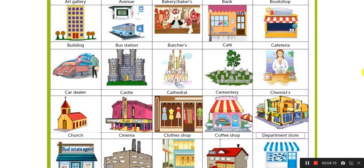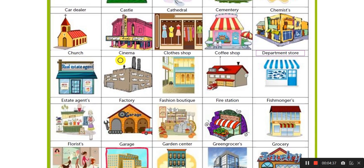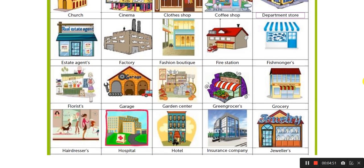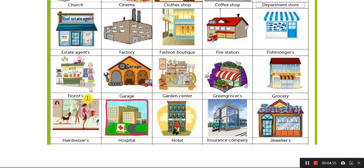I will continue mentioning these places: building, bus station, café, cafeteria, car dealer, castle, cathedral, cemetery, chemist, church, cinema, clothes shop, coffee shop, department store, estate agents, factory, fashion boutique, fire station, fishmongers, florist, garage, garden center, greengrocer, grocery, hairdresser, hospital, hotel, insurance company, jewelry or jewelers.